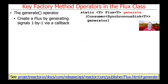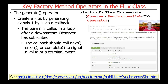The generate operator creates a Flux by generating signals one by one via a callback. This callback is provided as a parameter, and this parameter is typically called in a loop after a downstream observer has subscribed. The callback should be used to call next, error, or complete to signal a value or a terminal event.